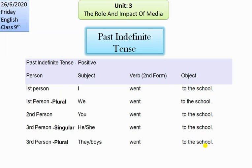Look at this chart to make your understanding clearer. For positive sentences: 'I went to the school.' For first person we use 'I,' first person plural 'we,' second person 'you,' third person singular 'he/she,' third person plural 'they.' In the positive sentence, subject 'I' is followed by the second form of 'go,' which is 'went,' then the object 'to the school.'